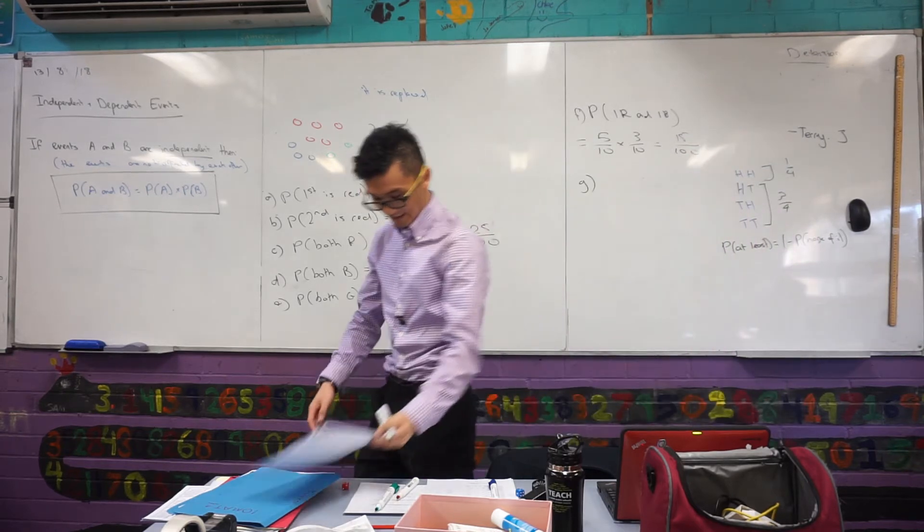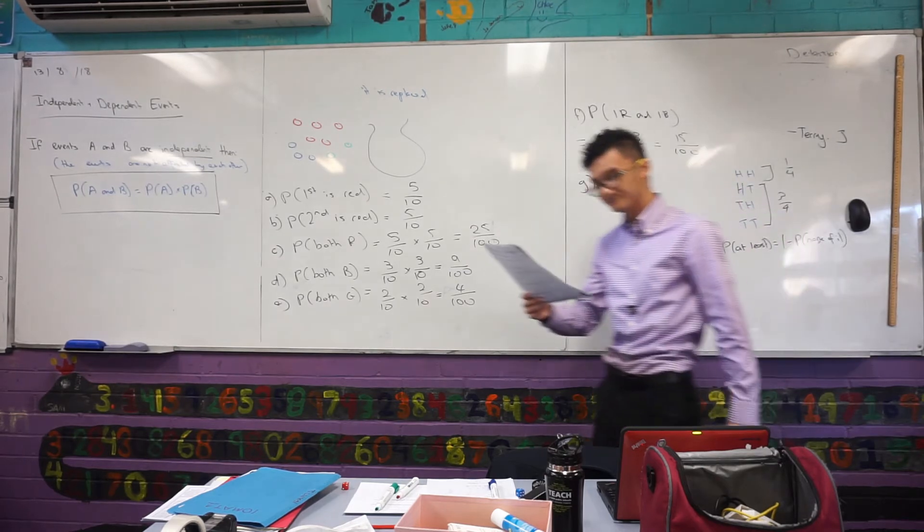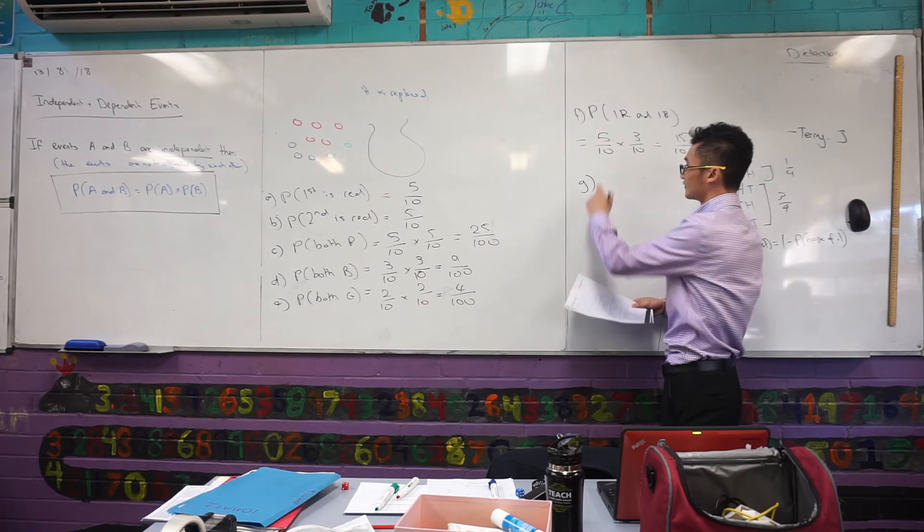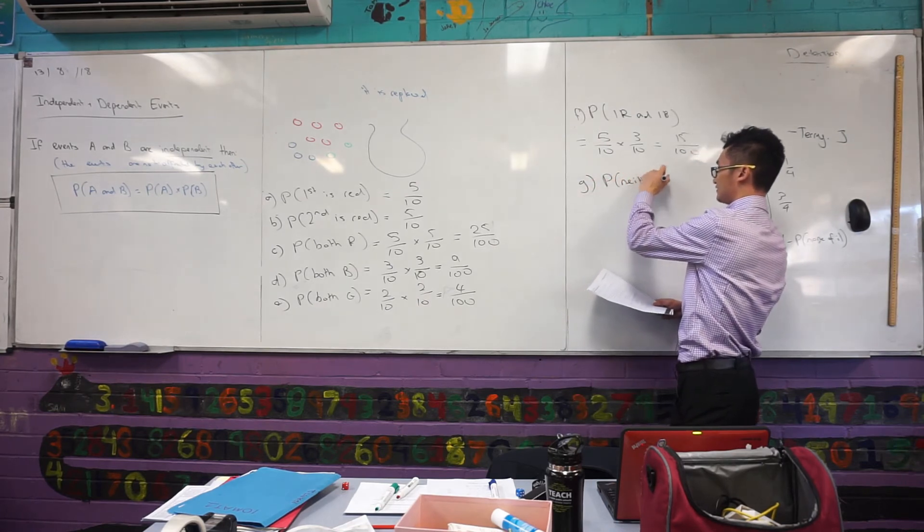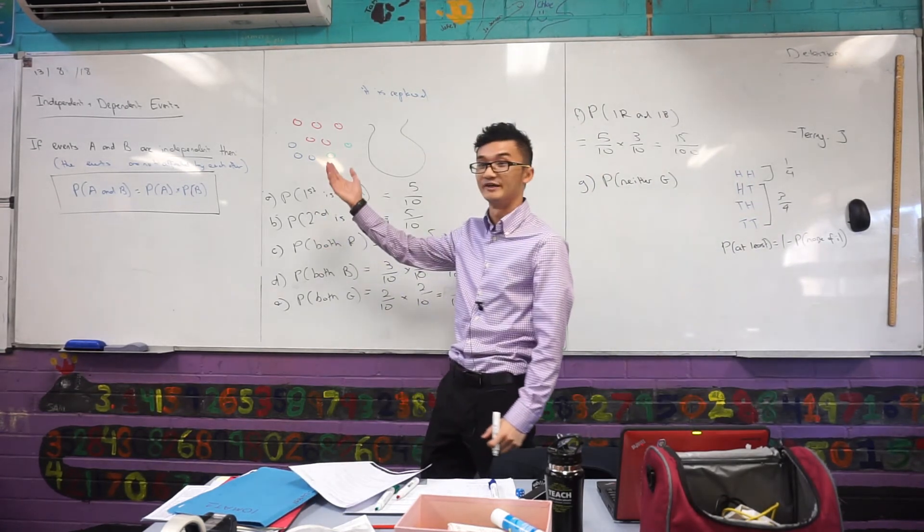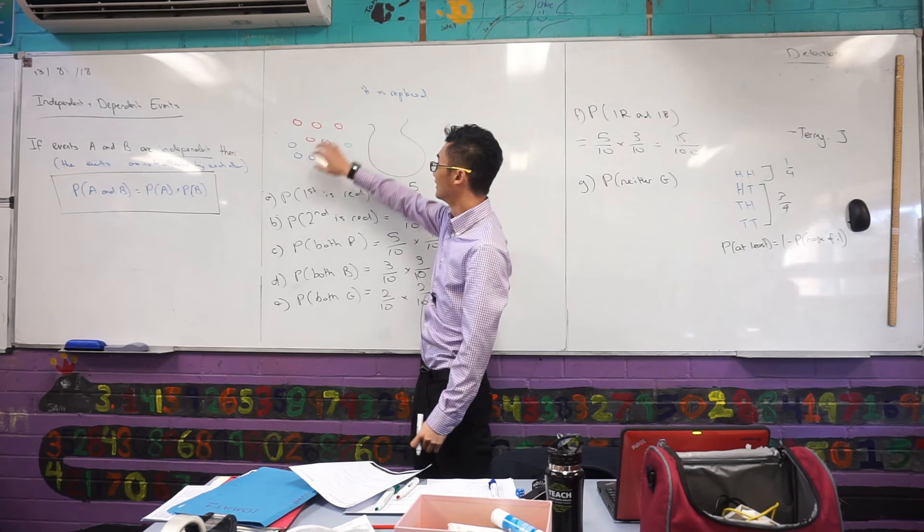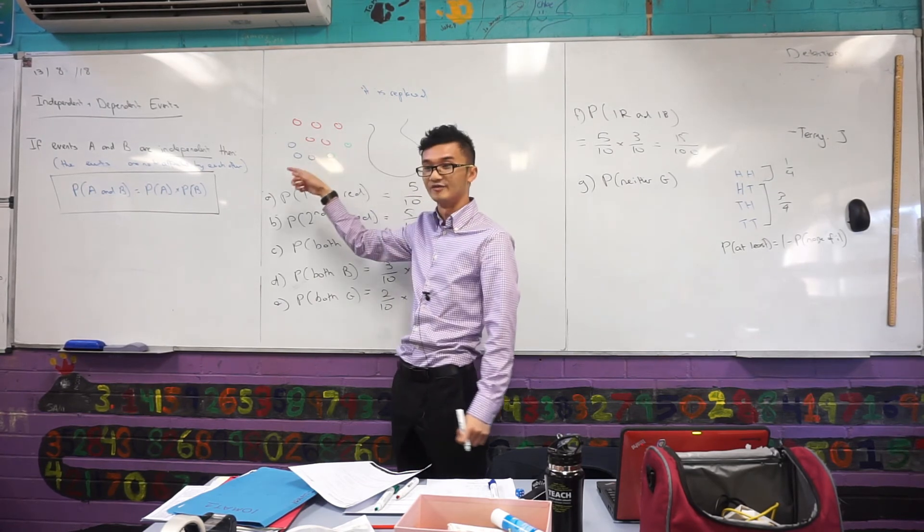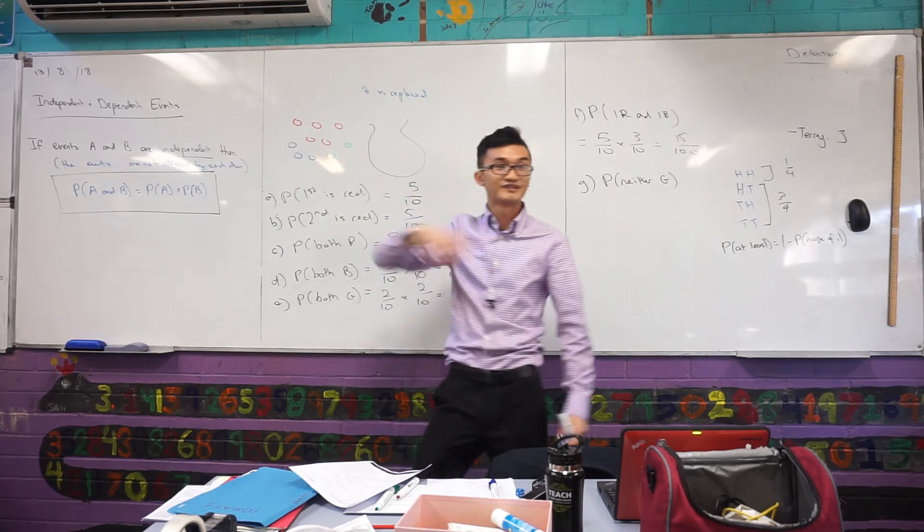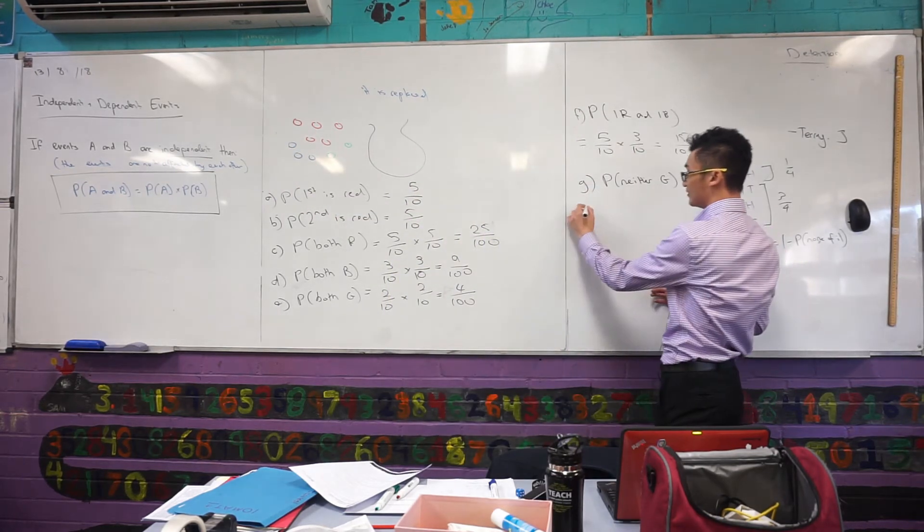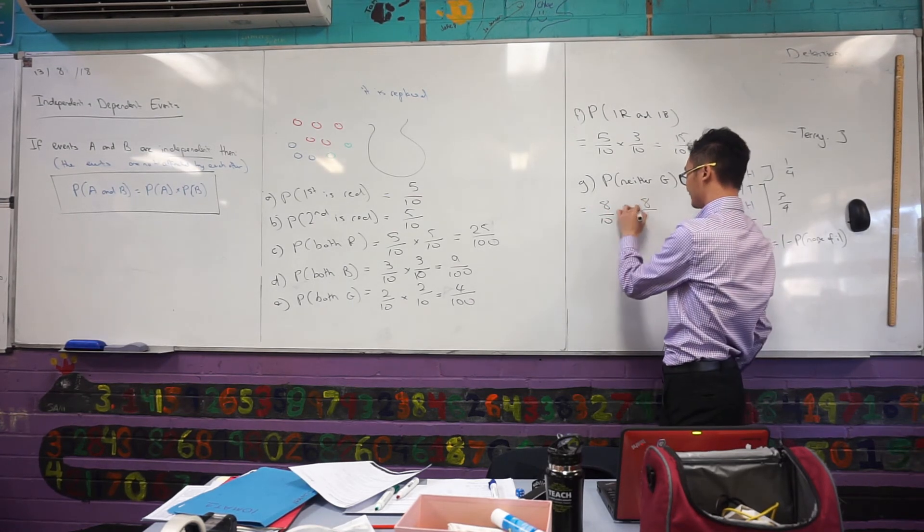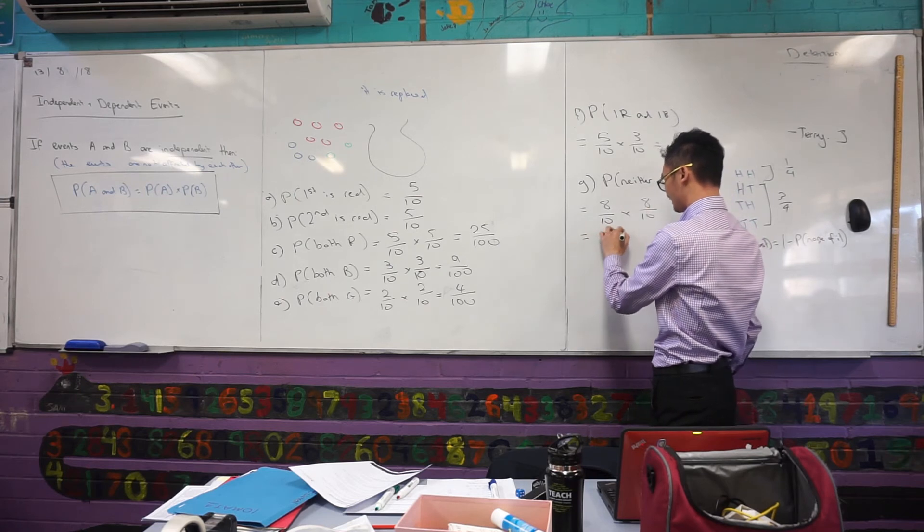Awesome. Almost there. Mary Lynn, next one. G? Yeah. I said 8 over 10 times 8. Yeah, how'd you get that? I looked at minus the green. Yeah, that's it. So, the probability of neither of them being green, don't overcomplicate it. You're saying, well, if I take the greens out, there's 8 of them left, so I can choose from any of those 8. If I choose a red or blue, that's not green, right? So, the probability of neither being green, that's just 8 over 10. And I'll do the same thing, because they're independent. Times 8 over 10. That's actually pretty high. 64 out of 100.